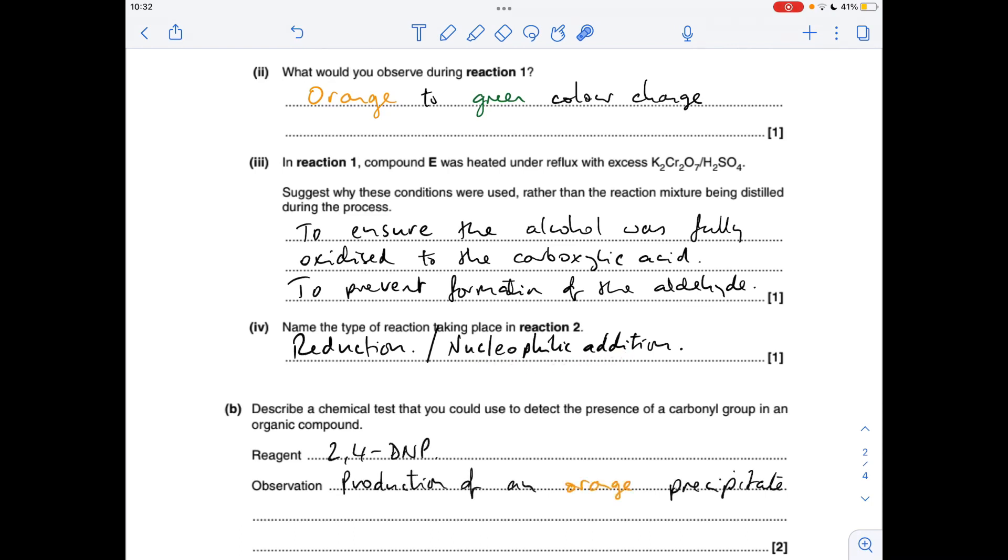Part B: a chemical test you could use to detect the presence of a carbonyl group. You'd add 2,4-DNP or Brady's reagent, and you would get an orange precipitate.